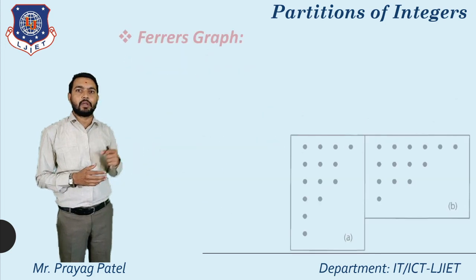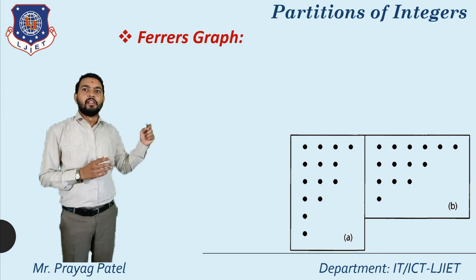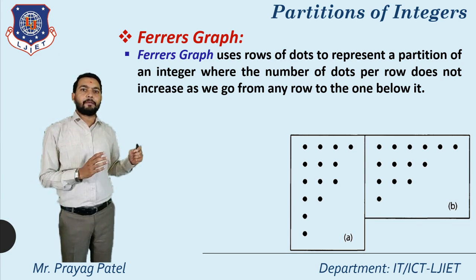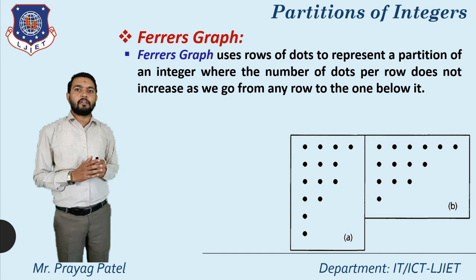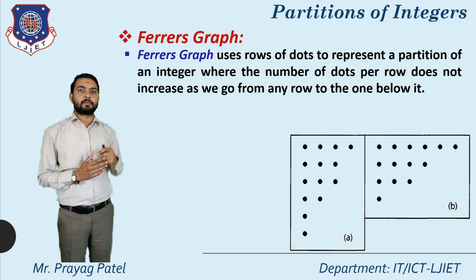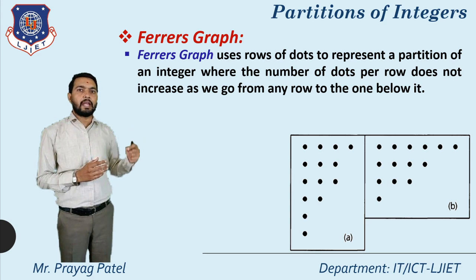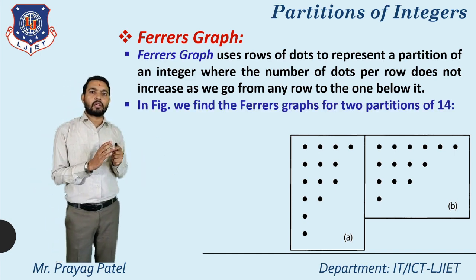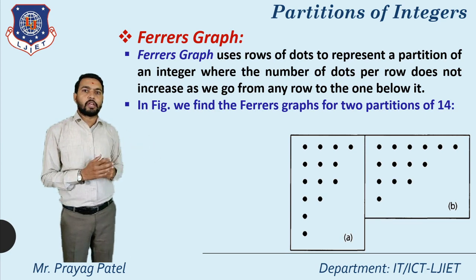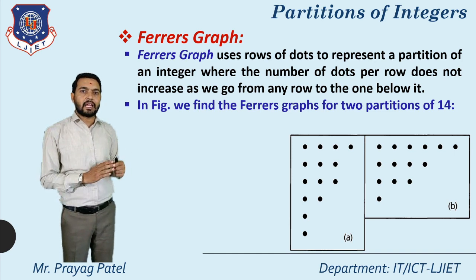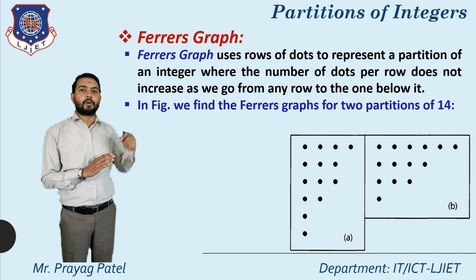The last topic of this lecture is the Ferrers graph. Here we represent partitions in the form of a figure using rows of dots. The number of dots per row does not increase as we go from any row to the row below. For example, in the first figure, the first row has 4 elements, second row has 3, third row has 3, next row has 2, then 1, then 1. You always decrease or keep equal — never increase — from one row to the next.